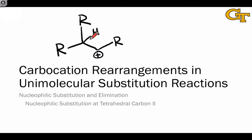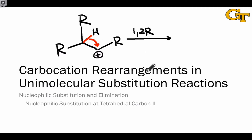Until now, we haven't had much to say about the 1,2R elementary step, which involves the shift of a bond — a pair of bonding electrons — from one carbon to a carbon next door, where the carbon next door bears only six electrons. Because it requires a six-electron building block, the 1,2R step is characteristic of carbocations.